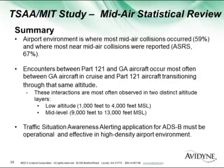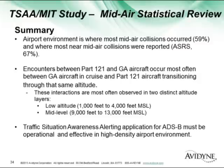In summary, the airport environment is where most of the mid-airs occurred, as we expect, and where most of the near mid-airs are also reported — even 67% of the near misses are reported there. Encounters between Part 121 and GA aircraft are most often between a GA aircraft in cruise and a Part 121 aircraft transitioning through the same altitude. Our TSAA application for ADS-B has to be incredibly effective in the terminal area and at high-density airports to handle lots of airplanes moving in different directions.